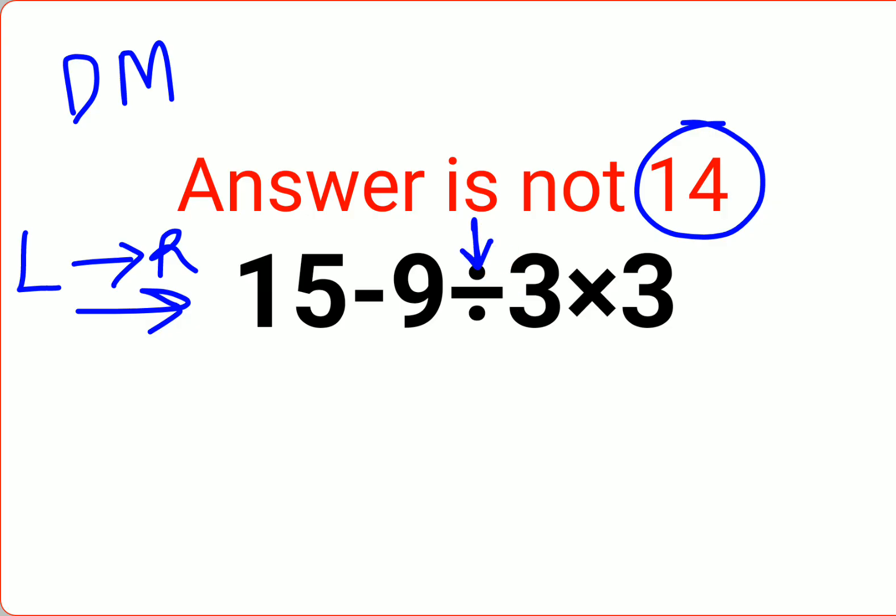So that means here we need to do 9 divided by 3 first. So we have 15 minus 9 divided by 3, which is minus 3 multiplied by 3. This then comes out to be 15 minus 3 multiplied by 3 which is minus 9. So 15 minus 9, the answer for this question is supposed to be 6.